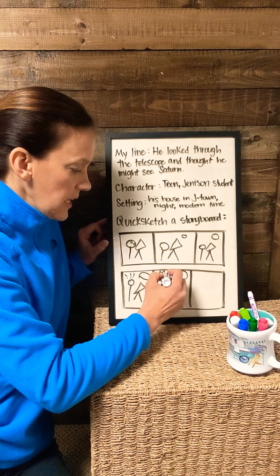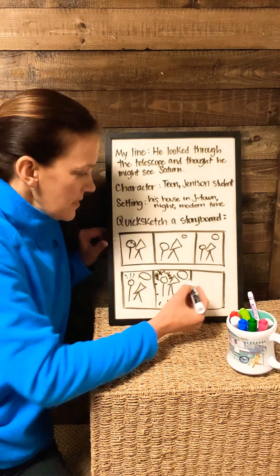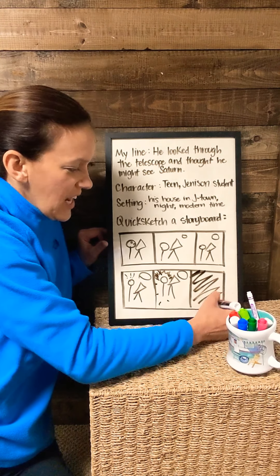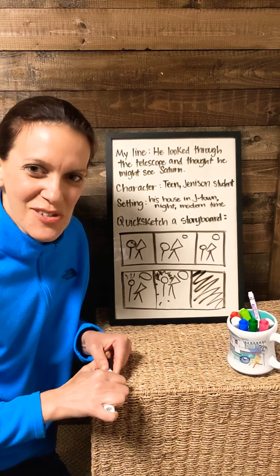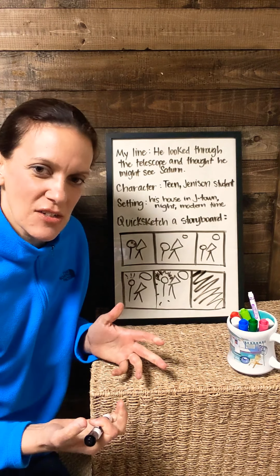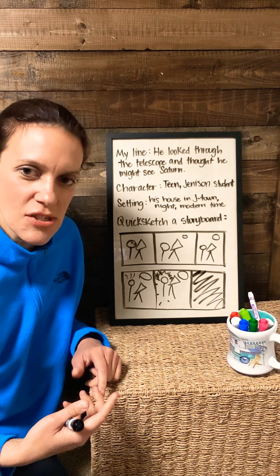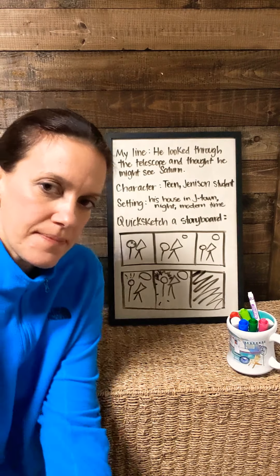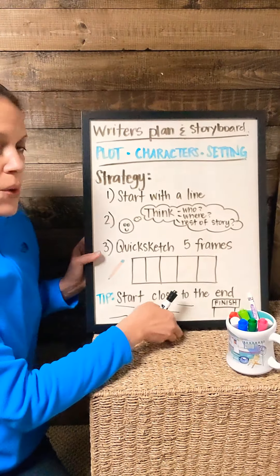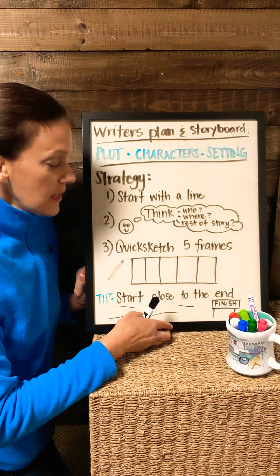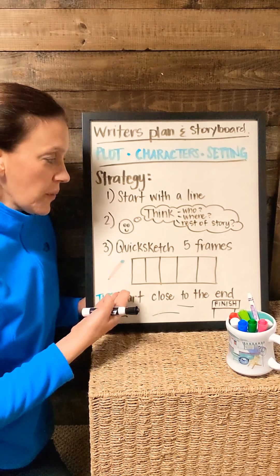Now I think I'm ready to start sketching. Where to begin? I could start with him going to the closet to get out his telescope, but I don't think so — I don't think that would be flash fiction. I could start with him walking outside with his telescope, but I think that would still be too long. So instead, what I'm going to do is start with him putting his eye to the telescope for the first time. So here's my guy, here's his telescope, and we'll just pretend that his eye is touching it.